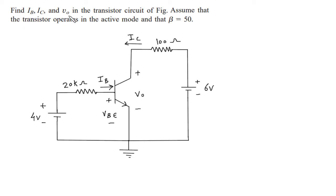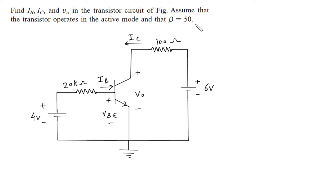Find IB, IC, and VO in the transistor circuit of the figure. Assume that the transistor operates in the active mode and that beta is equal to 50.